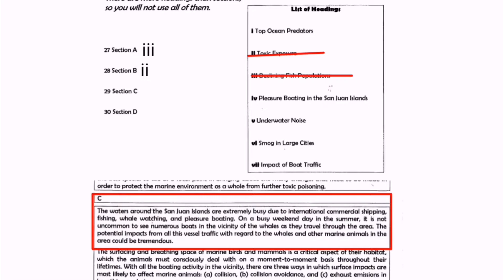It is not uncommon to see numerous boats in the vicinity of whales — vicinity means area — and it has become common practice to see boats in the area of whales. The potential impacts from all this vessel traffic with regard to whales and other marine animals in the area could be tremendous. Vessel traffic means boat traffic, and the writer says the impacts of boat traffic on whales and other marine animals could be tremendous. So paragraph C is about the impacts or effects of boat traffic. The right heading is heading number seven: impact of boat traffic. We can cross heading number seven and write Roman numeral 7 in front of question number 29.